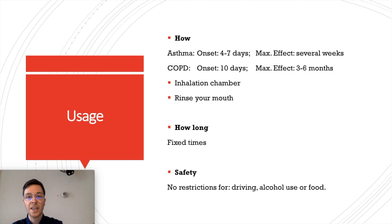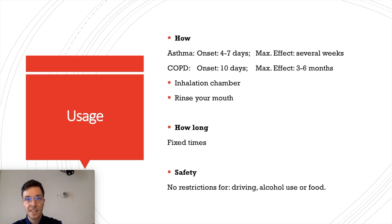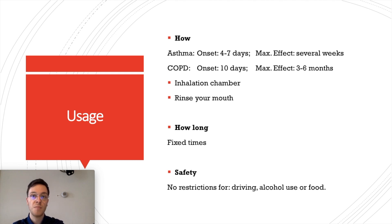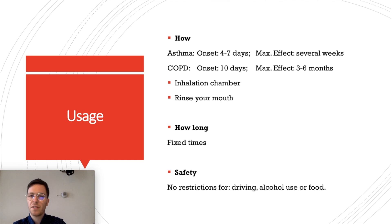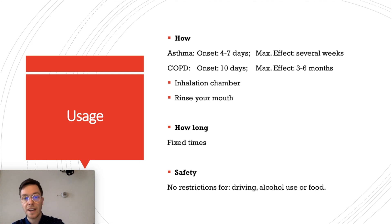When used for asthma, you may see effects within 4 to 7 days after initial use, with maximum effect within several weeks. For COPD it takes a little longer — benefits may be experienced within 10 days and maximum effect is achieved within 3 to 6 months, so you need to use it for a long time before noticing results. Together with your doctor, you will make a plan, build up the medication dose, and always take your medication at fixed times.